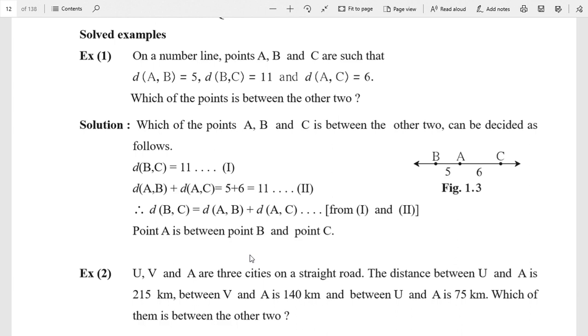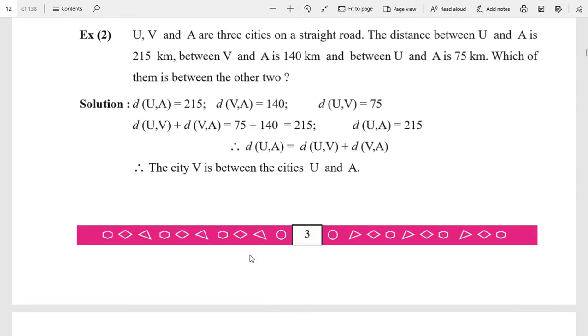Same example, next example. U, V, and A are three cities on a straight road, that is collinear. The distance between U and A is 215 km. The distance between V and A is 140 km, and the distance between U and A is 75 km. Actually this is a little mistake, the printing mistake.